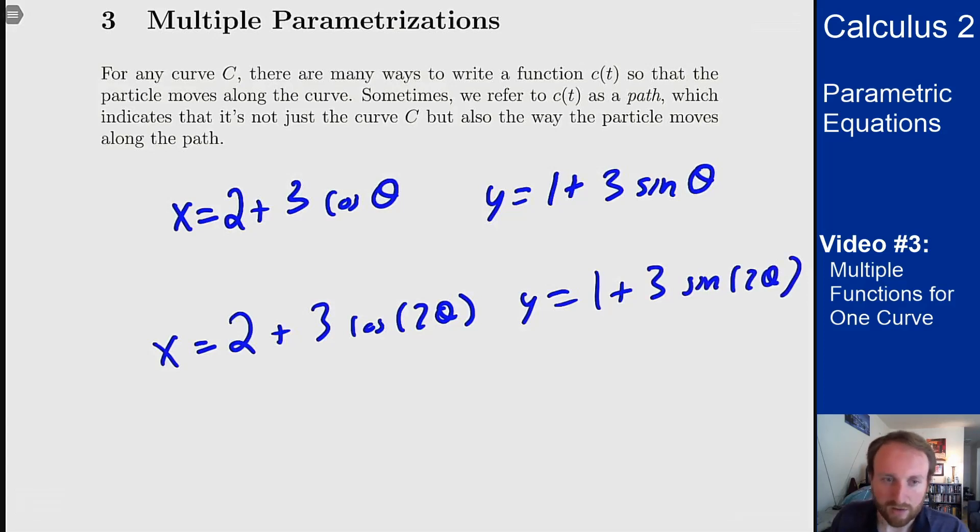It covers the same circle, however it's going to do it twice as fast because of the 2θ inside. It goes around the circle twice as fast as before. Same curve, double speed.